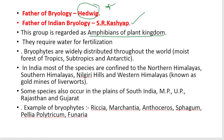Bryophytes are widely distributed throughout the world, found in moist forests of tropics, subtropics, and Antarctic regions. In India, most species are confined to the northern Himalayas, Nilgiri Hills, and Western Himalayas. The Western Himalayas are also known as the gold mines of liverworts.